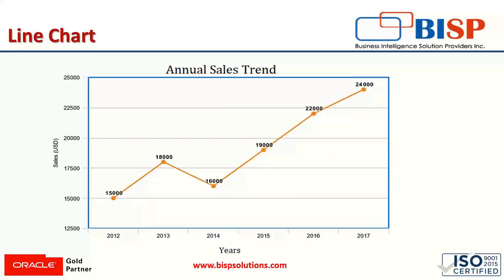The next category is the line chart, or line graph. Line graphs show changes or trends in continuous data over a period of time, with a line connecting the dots that represent the different values. In the picture, these various dots and the connecting line show the total sales for the given period. This is the visualization of data in the form of lines connecting the dots.